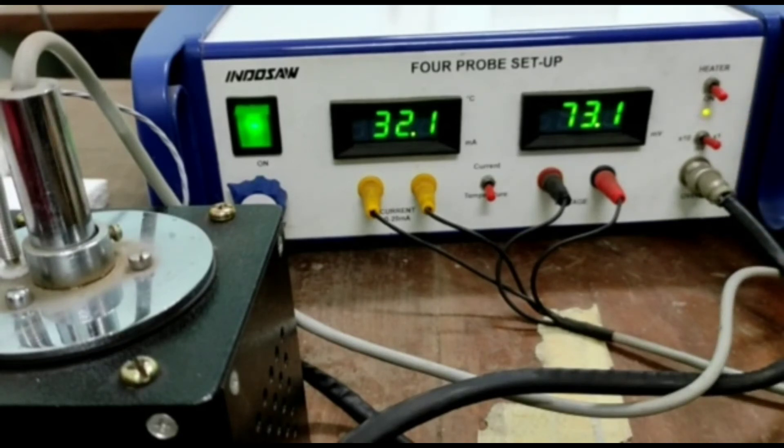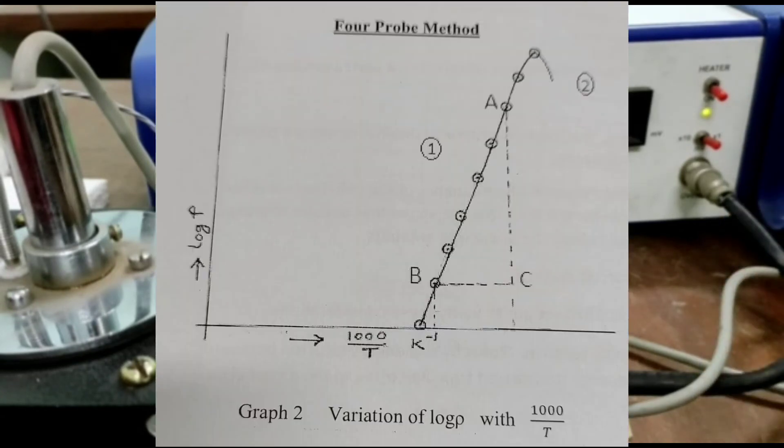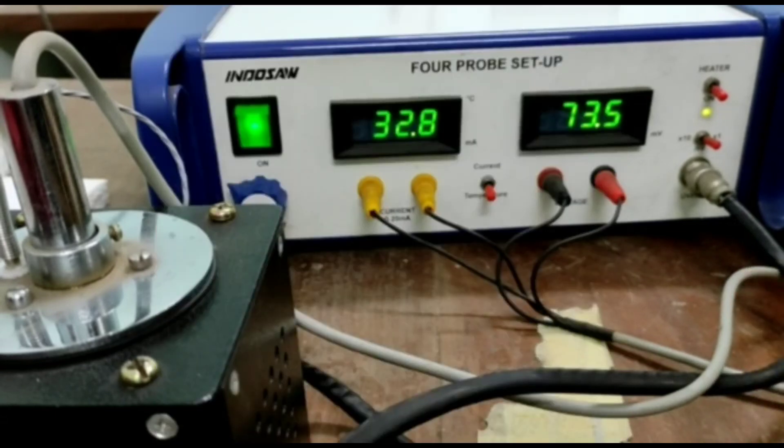Then you have to plot a graph between log rho and temperature. It is a straight line. Then you have to find the slope. After finding the slope, you have to calculate band gap using the given formula.